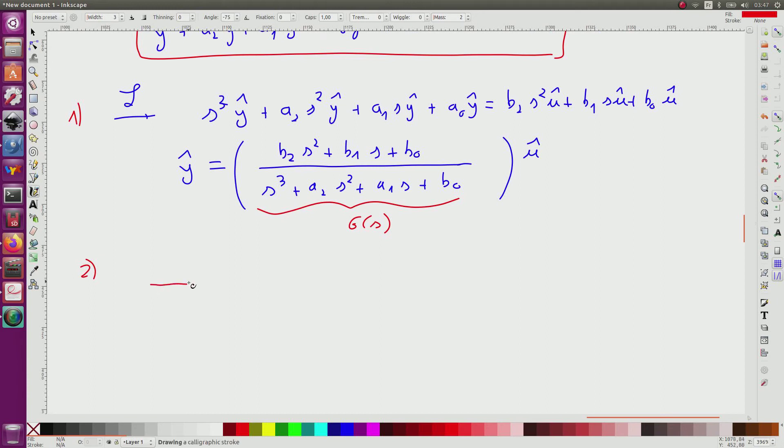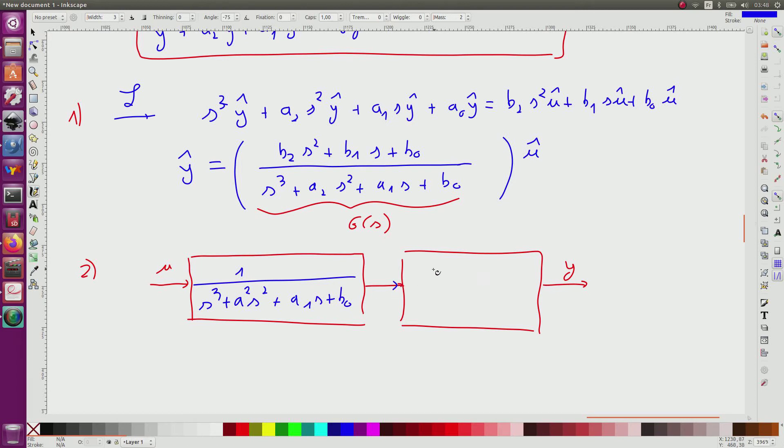So I observe that I have something like this: a first block, another block here, and here the output. On the first block I have the transfer function s³ plus a2 s² plus a1 s plus b0, and the other block is b2 s² plus b1 s plus b0. Here I should put hat since I am in the Laplace representation, and here I have something I will call x1-hat.